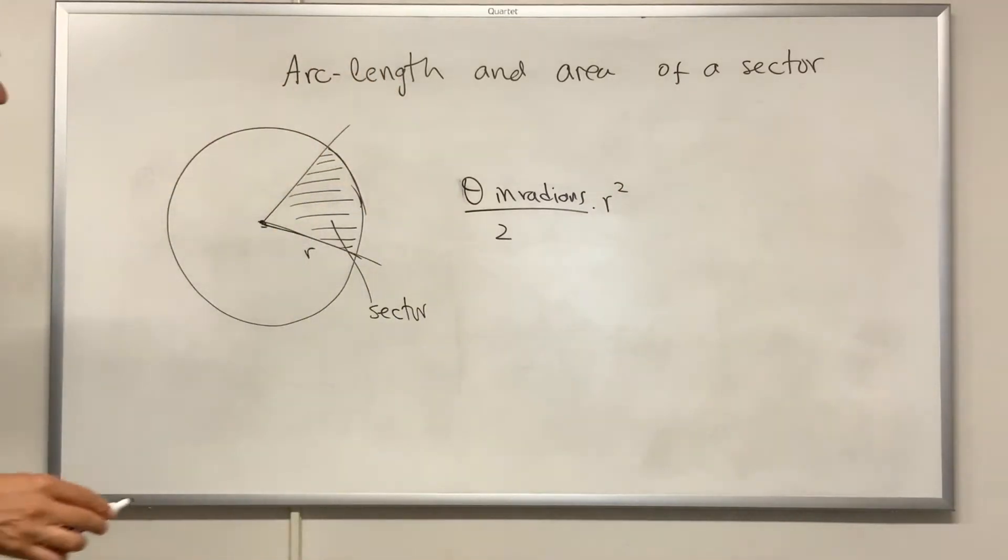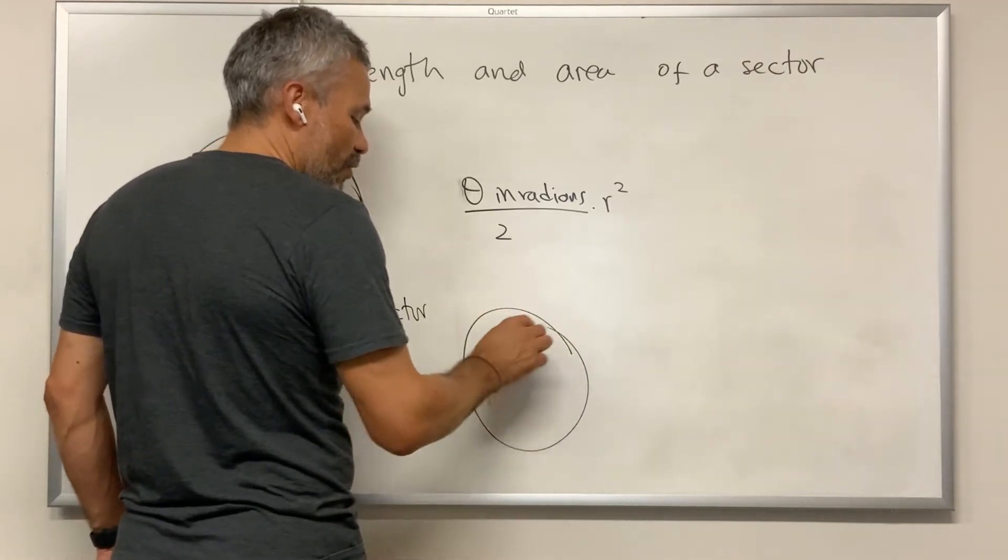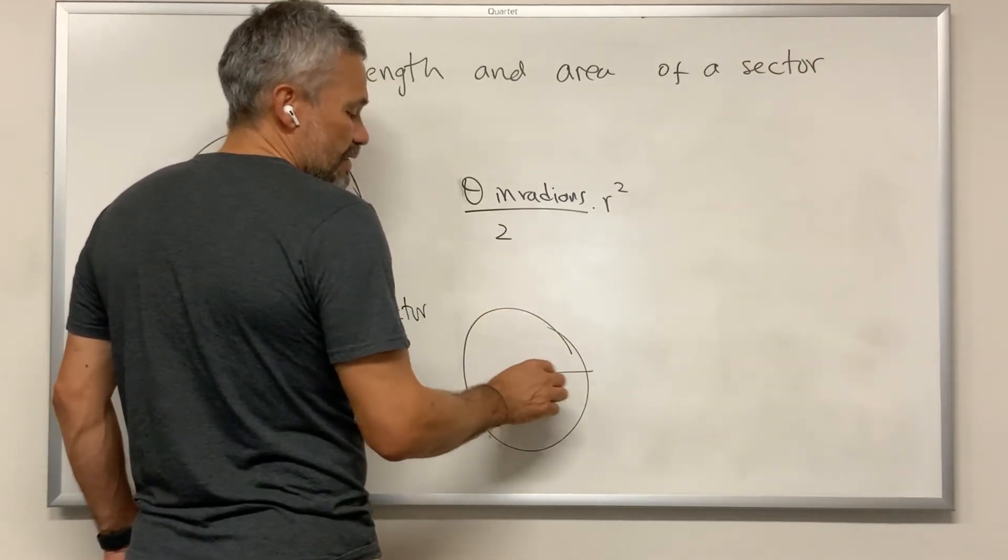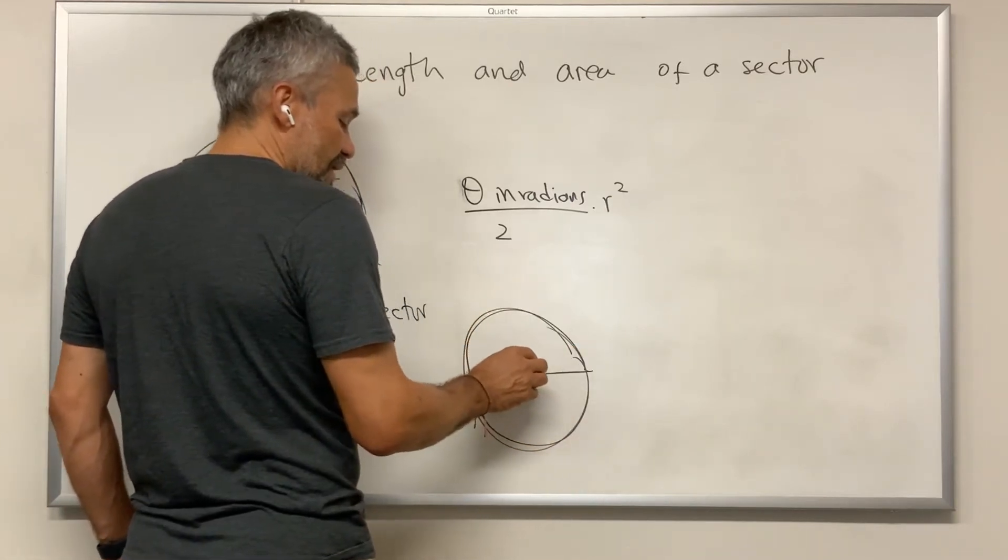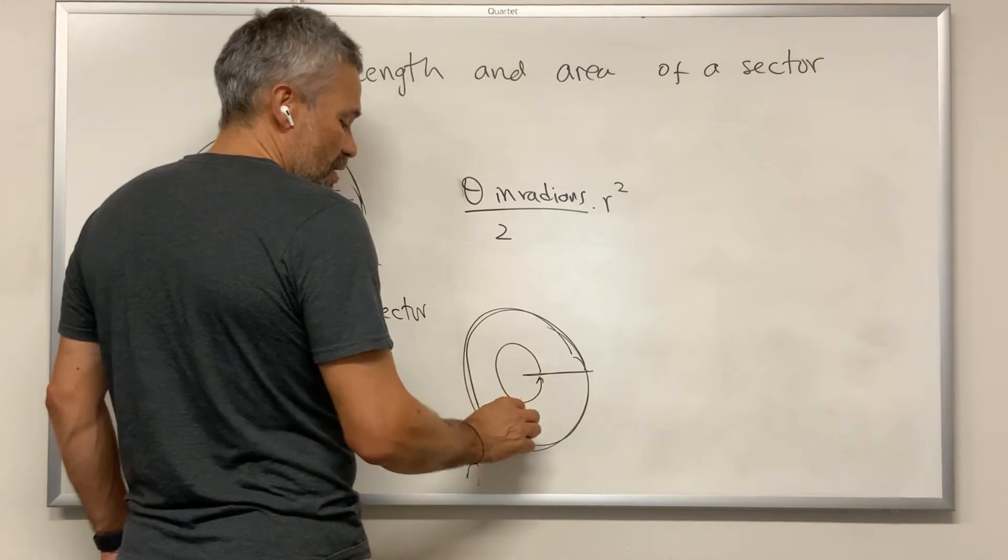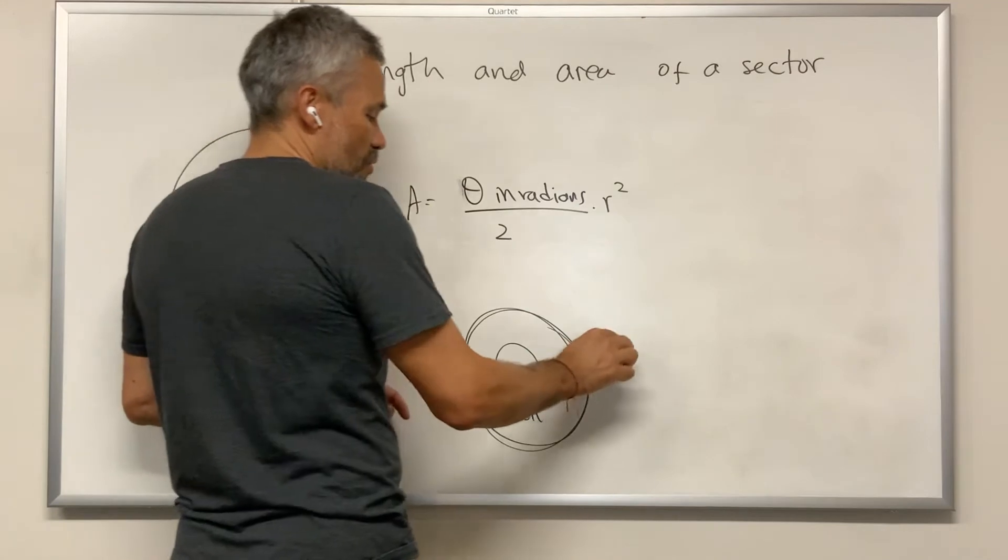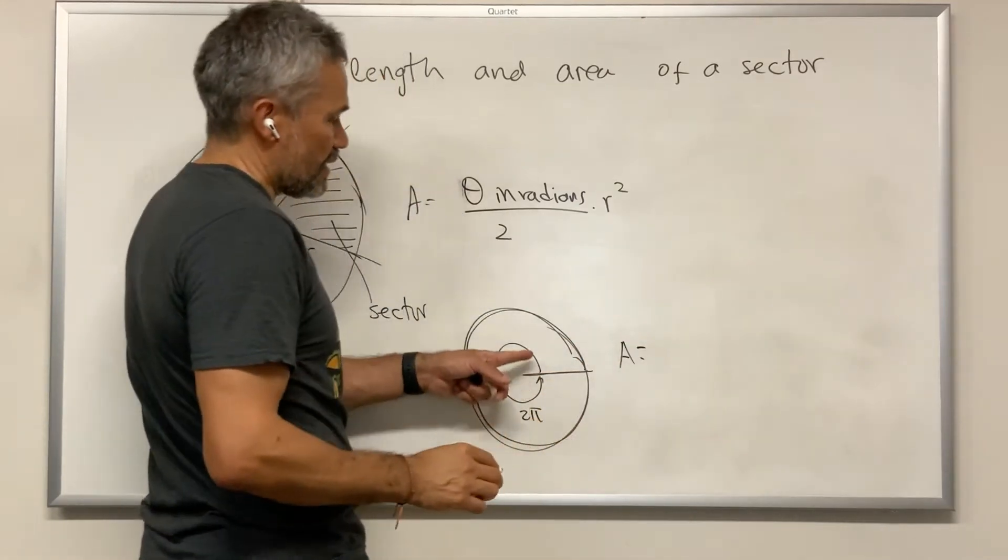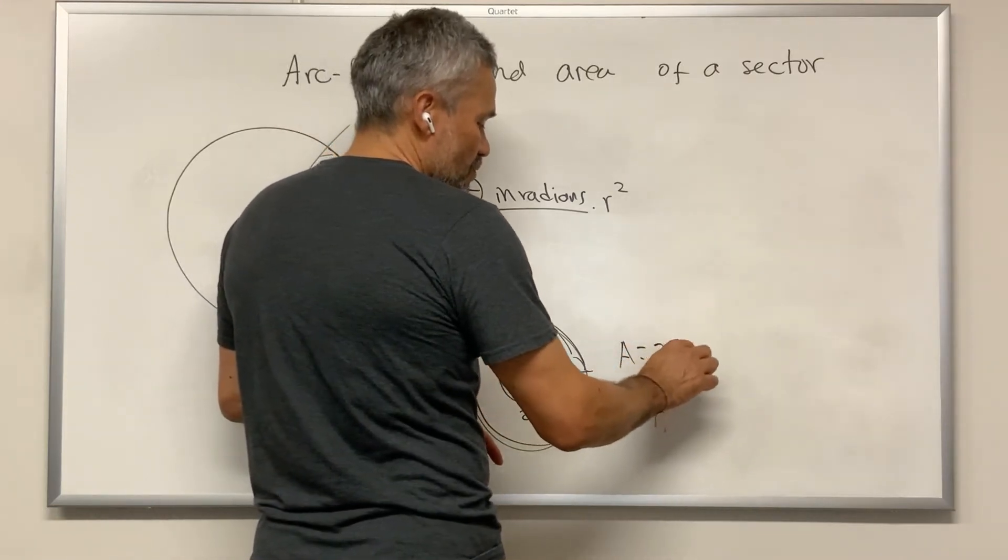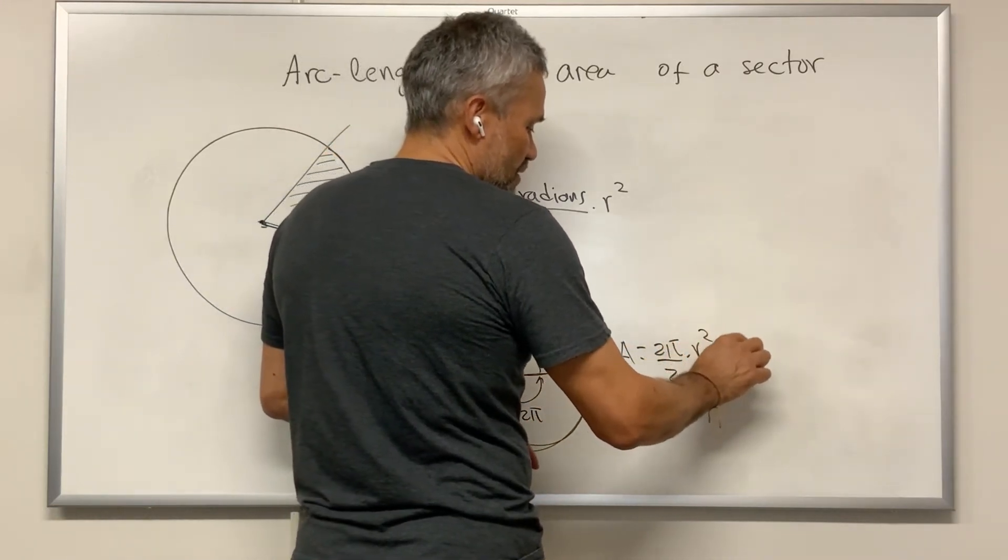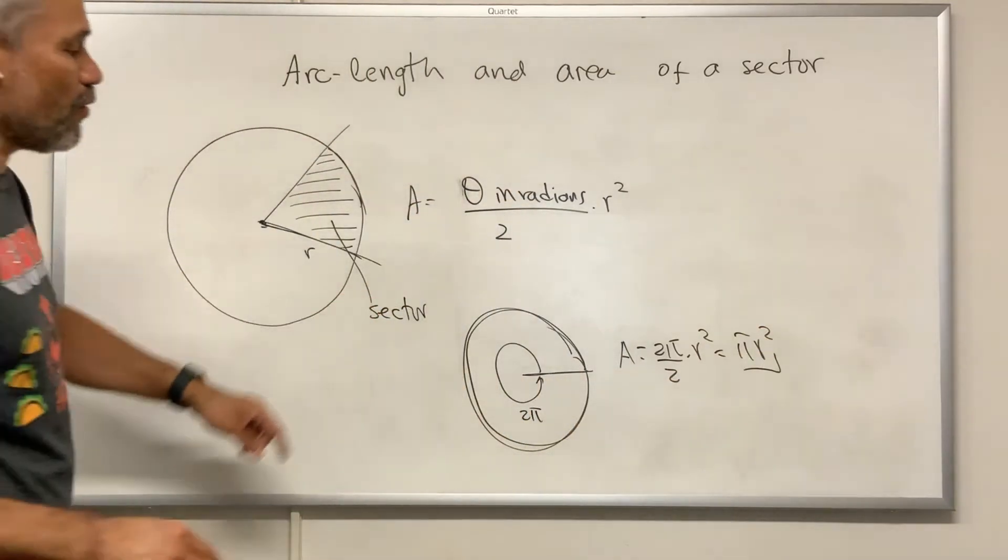Let's see some examples. If we have the whole circle, the whole circle can be considered as a sector. In this case, the angle would be 2π radians. Then the area would be the angle in radians 2π divided by 2 times radius squared, which is πr². Then this would be the area of the whole circle.